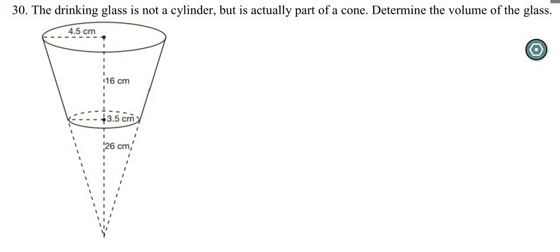All right, here's number 30 on your homework, finding the volume of this drinking glass. Make sure you pay attention. It says the drinking glass is not a cylinder, but it's actually part of a cone.